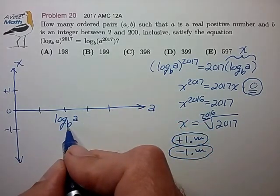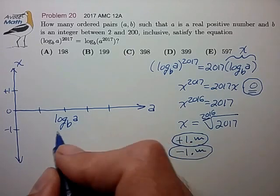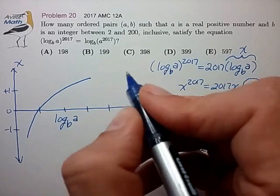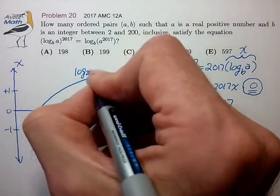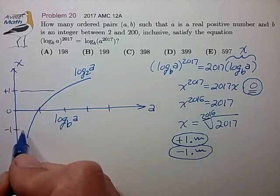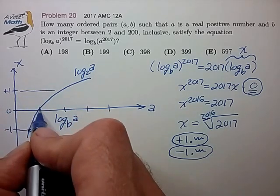And let's look at log to the base 2 of a. Let's see, what does that look like? That looks something like this, which intersects our target values at three different points.